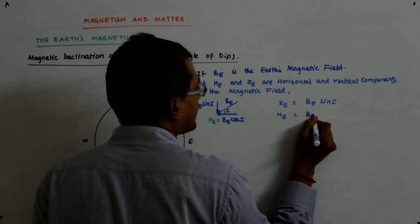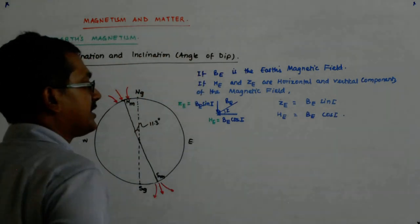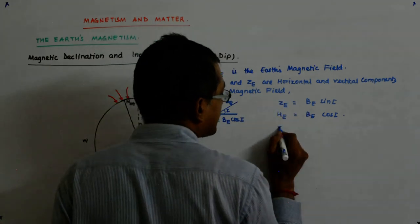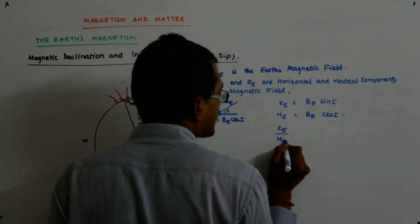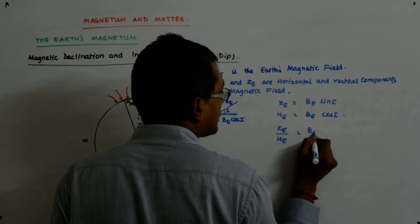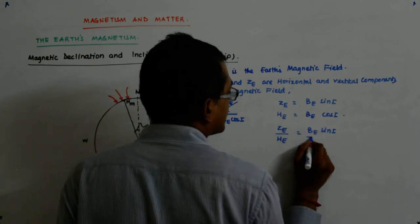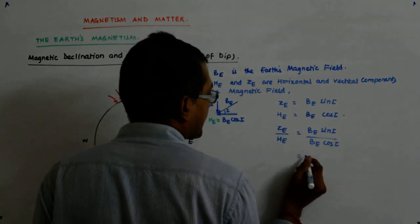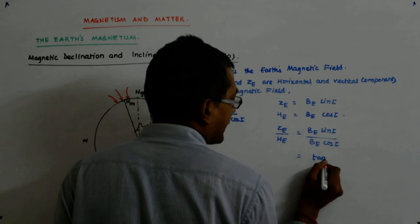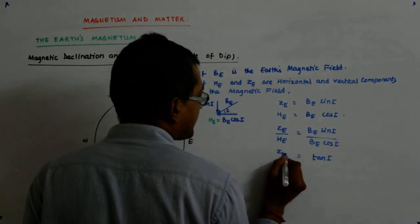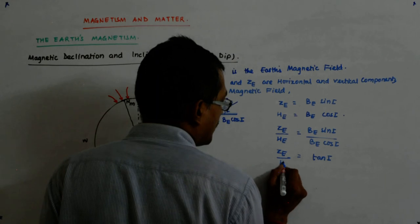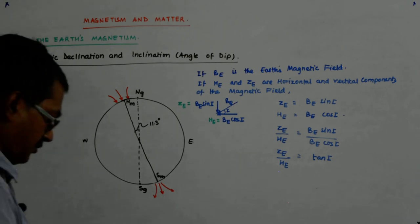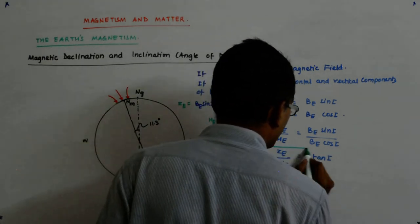Now if I divide them, that is ZE upon HE, that becomes Be sine I upon Be cos I. So that gives me tan I. So tan I is ZE upon HE.